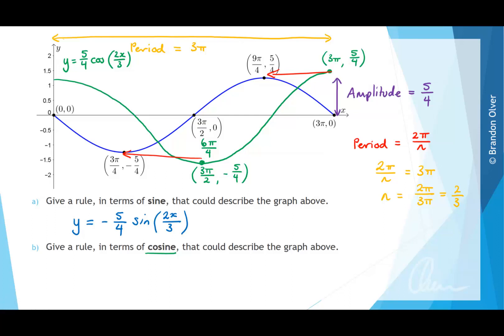So we want to translate the graph 3 pi on 4 units in the negative x direction. So to do this, we're going to have y equals 5 over 4 times cos. And then inside the brackets, we know that we need the 2 divided by 3 to multiply the x value. So that gives us the period that we want.